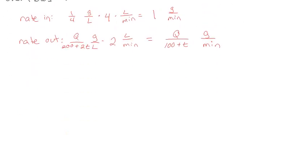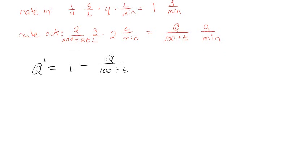So dQ/dt equals the rate in minus the rate out. If you didn't get the setup right, pause the video and rework it. Remember, we need to use homogeneous solutions — we had this method where we solve the homogeneous equation first, and then guess a particular solution. Go back and look that up if needed. The full equation is dQ/dt + Q/(100 + t) = 1.